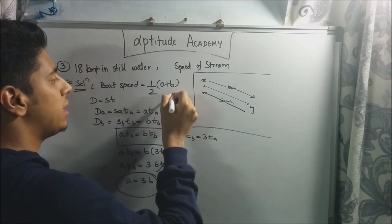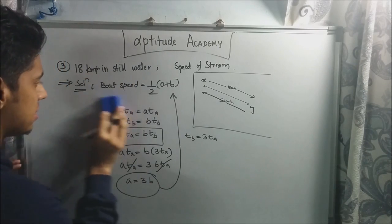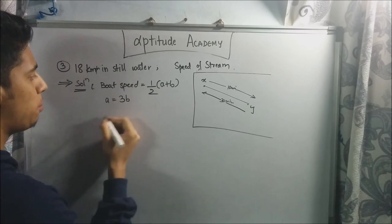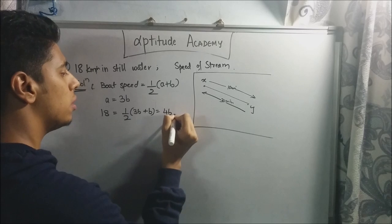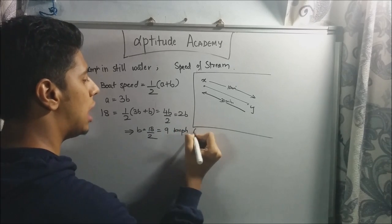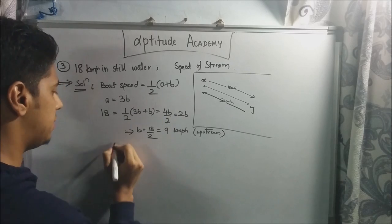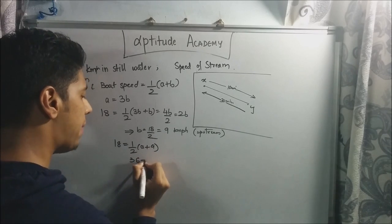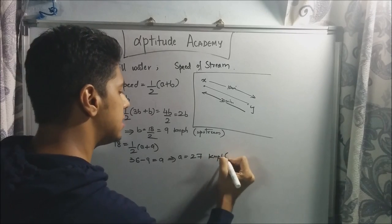Now substitute A equals 3B into the boat speed formula. Boat speed is 18 km per hour, so 18 equals half of (A plus B) equals half of (3B plus B) equals half of 4B, which is 2B. Therefore B equals 18/2, or 9 km per hour — this is the upstream speed. Now substitute B back: 18 equals half of (A plus 9), so 36 minus 9 equals A, giving A equals 27 km per hour — this is the downstream speed.